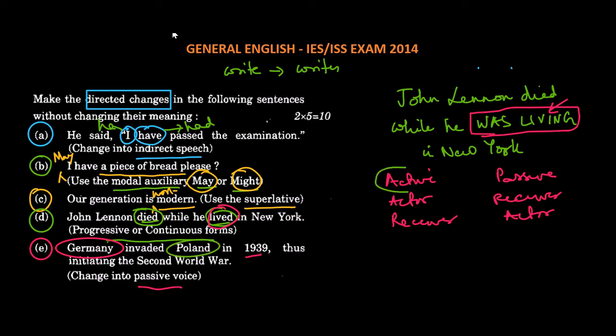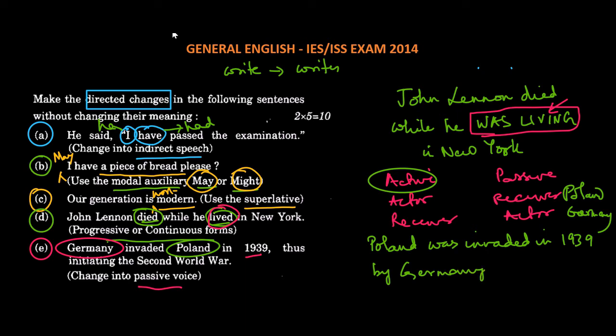So in the passive voice, the receiver will come first. So Poland will come first and Germany will come second. So the sentence would be, Poland was invaded in 1939 by Germany, which initiated the second world war.